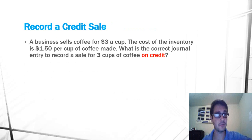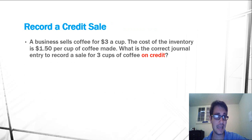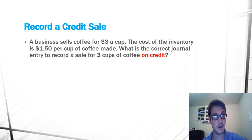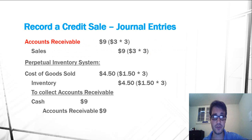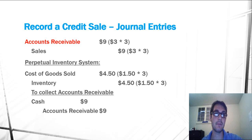So now let's look at the difference of recording a credit sale. I just changed the problem a little bit — instead of asking about a cash sale, it now reads: what is the correct journal entry to record a sale of three cups of coffee on credit? So this is no longer a cash transaction; it is now a credit transaction. There aren't that many changes to the journal entry — all we're changing is instead of debiting cash, we are now debiting accounts receivable for $9.00.